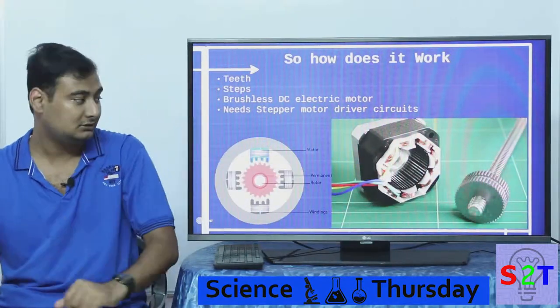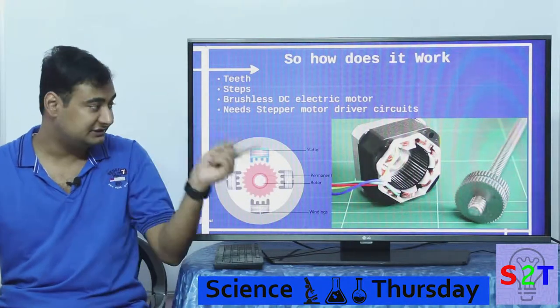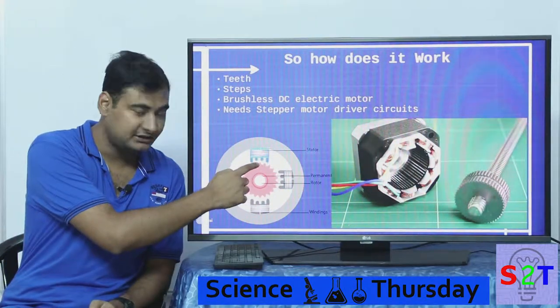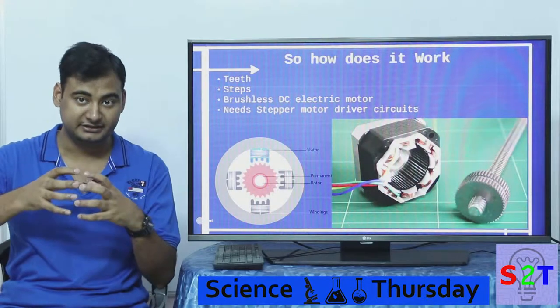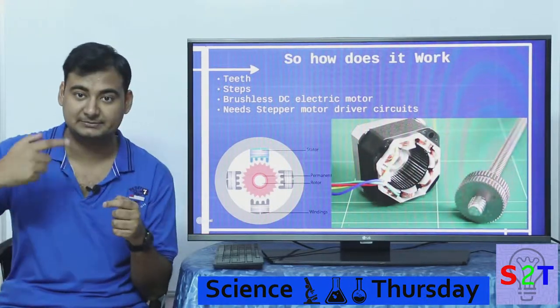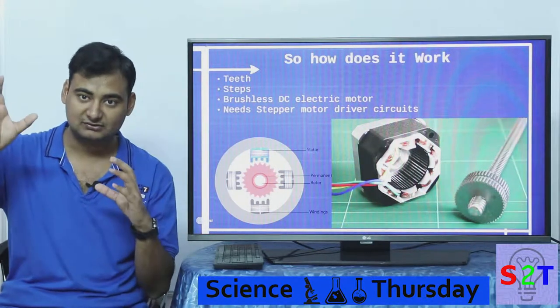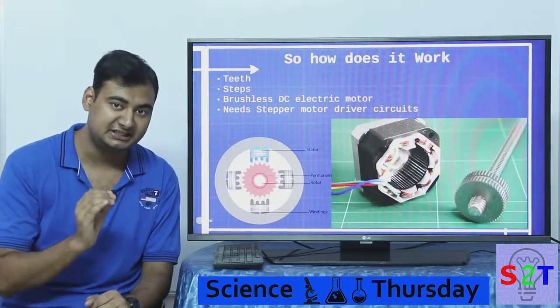So does the electromagnet that is on the stator. Now this creates a very unique magnetic arrangement in which scenario you end up where the teeth want to align with itself. Now that alignment is the reason why the motor does not keep spinning independently. Because of the teeth nature, it always wants to snap.